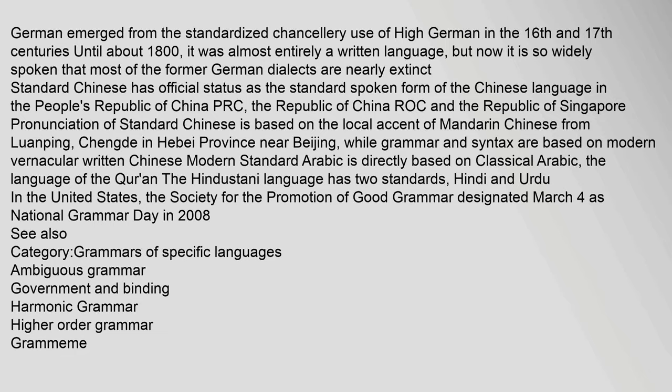Standard German emerged from the standardized chancellery use of High German in the 16th and 17th centuries. Until about 1800 it was almost entirely a written language, but now it is so widely spoken that most former German dialects are nearly extinct. Standard Chinese has official status as the standard spoken form of the Chinese language in the People's Republic of China, the Republic of China, and the Republic of Singapore. Its pronunciation is based on the local accent of Mandarin Chinese from Luanping, Chengde in Hebei province near Beijing, while grammar and syntax are based on modern vernacular written Chinese. Modern Standard Arabic is directly based on Classical Arabic, the language of the Quran. The Hindustani language has two standards — Hindi and Urdu. In the United States, the Society for the Promotion of Good Grammar designated March 4 as National Grammar Day in 2008.